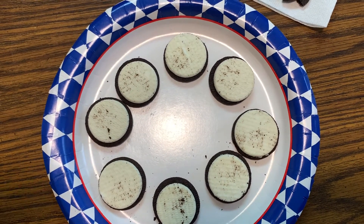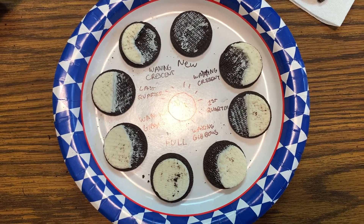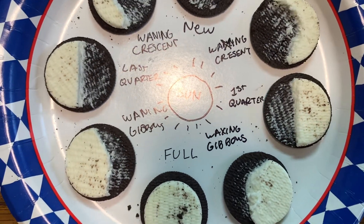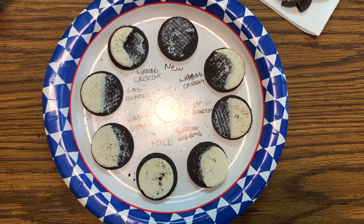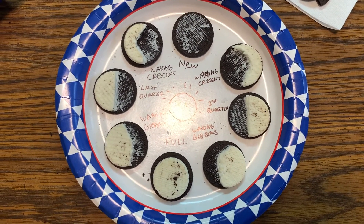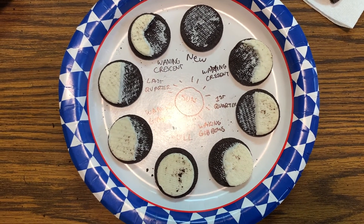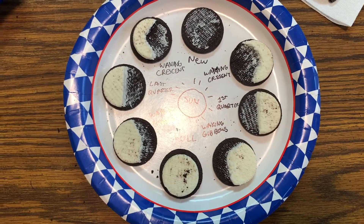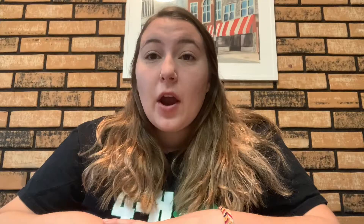Here's my finished moon phase diagram with the Oreo cookies. As you can see, I have the Sun in the middle with the different phases labeled, and on the outside I have the Oreo cookies shaped to look like whatever the moon would be in that particular phase. I hope you have fun with this project — and now you can eat your cookies! Keep an eye out in the night sky tonight and see if you can figure out what phase the moon is in.